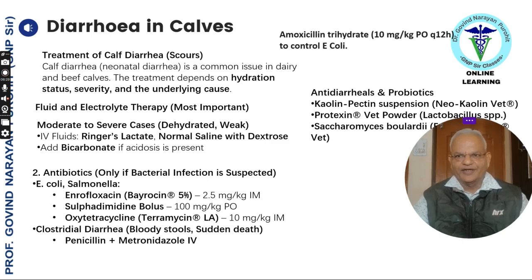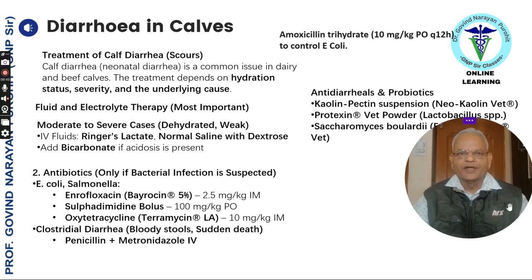Now to talk about diarrhea in different animal species. First, diarrhea in small calves — calf scours occurs in young calves, also known as neonatal diarrhea, and is a common issue in dairy and beef cattle. Treatment depends on hydration status, severity, and the underlying cause. For moderate to severe cases, one should replace fluids with IV fluids like Ringer's lactate or normal saline with dextrose, and add bicarbonate if acidosis is present.